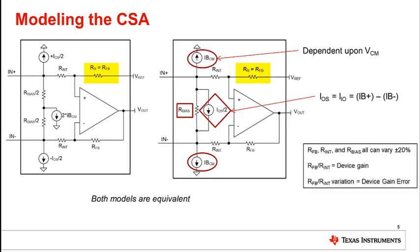Please note that resistor RR is not technically a feedback resistor, but it is the same resistor as RFB. Thus, in the aim of simplicity, RR will be referred to as RFB for the rest of the analysis.